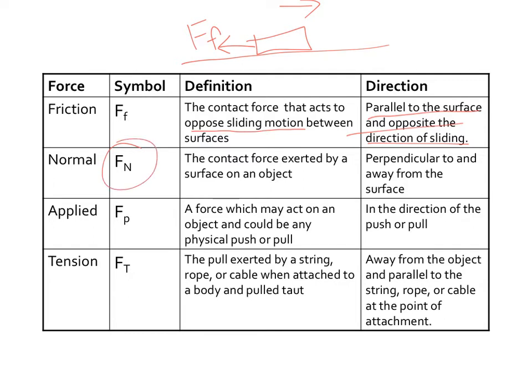Alright, normal. This is a very important one. Normal is the contact force exerted by a surface of an object. It's perpendicular to and away from the surface. So essentially, if this is like say a book right here, and it's sitting on this table, how come it's not falling straight through the floor? Like what's preventing it from doing that? Well...